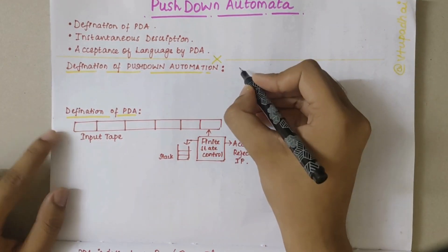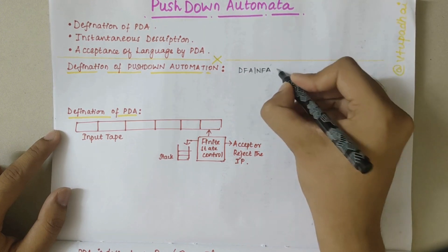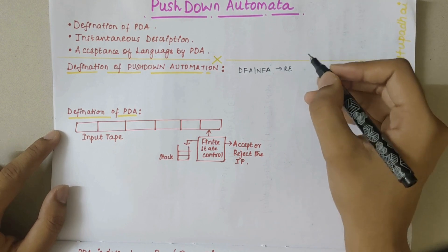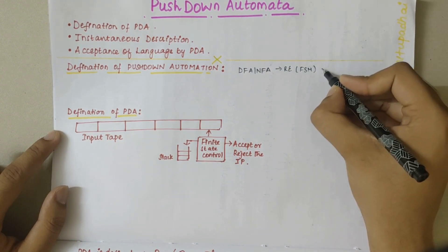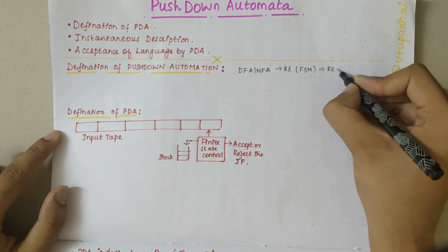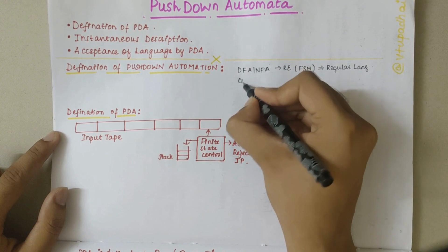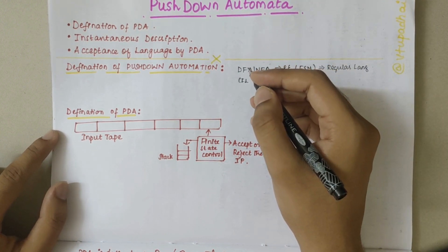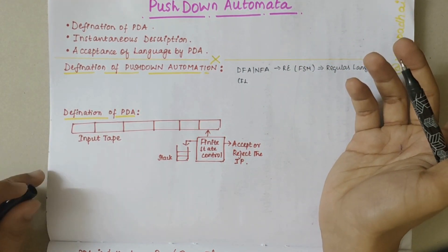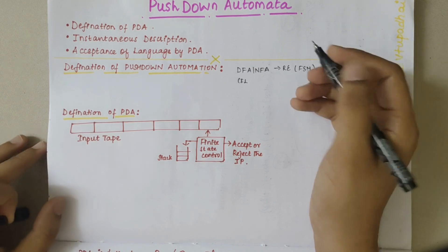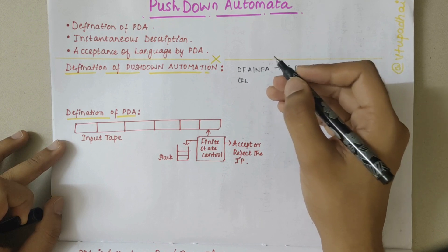For every DFA or NFA for a regular expression, this regular expression is the representation of that particular finite state machine. This language is accepted, which is called a regular language. Similarly, CFL — context free language — is a subset of regular languages.